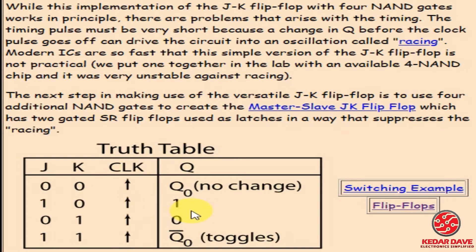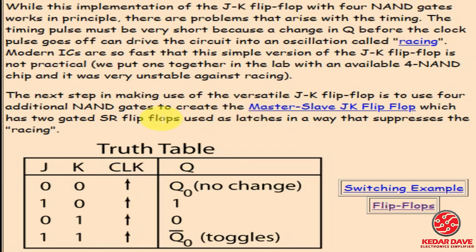To summarize the truth table: when both J and K are zero, no change; when J is one and K is zero, output is one; when J is zero and K is one, output is zero; and when both are one, the output toggles. Previously we explained that to avoid the race around condition, the clock timing pulse should not be very short — it should be within a particular range.